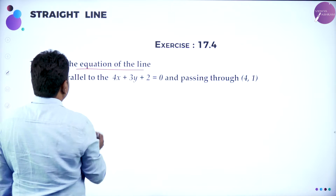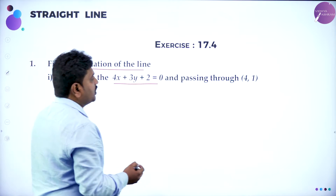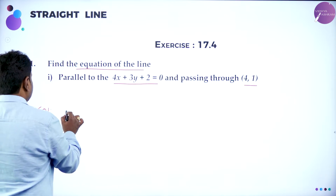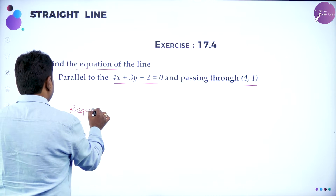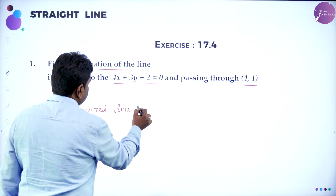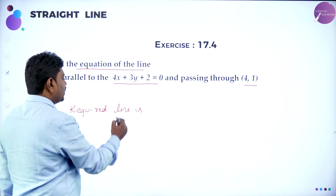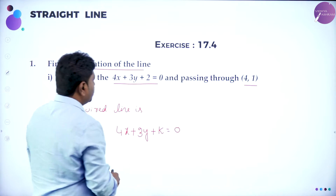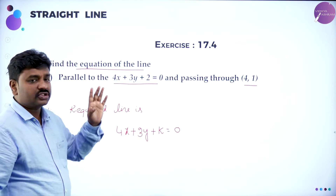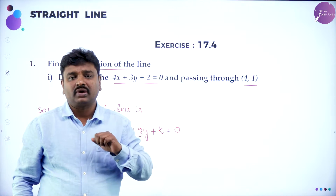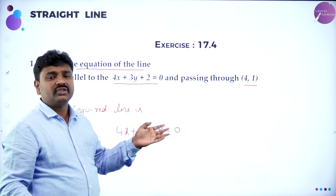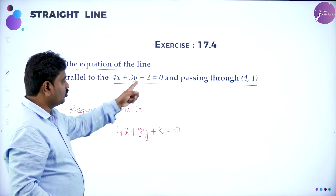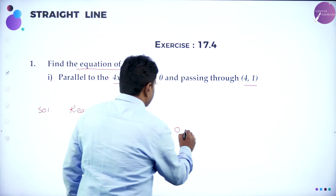Find the equation of the line parallel to 4x + 3y + 2 = 0 and passing through (4, 1). The required line is parallel to the given line, so it will have the same form. Required line is 4x + 3y + k = 0 — in place of 2 we write k. Call this equation 1. We don't know the value of k, but they gave a hint: the line passes through (4, 1).